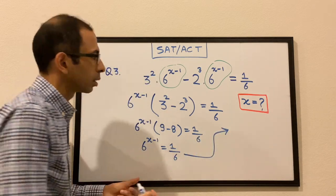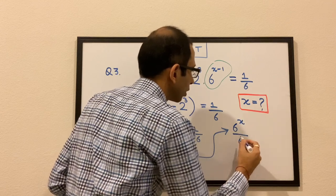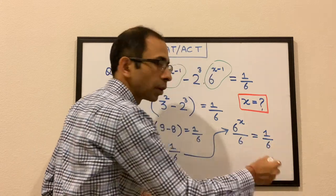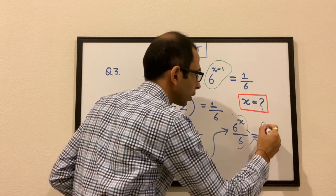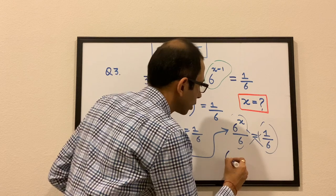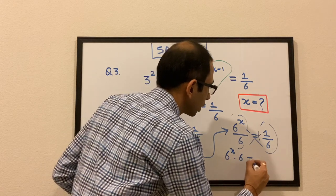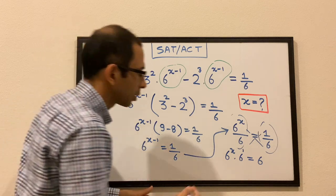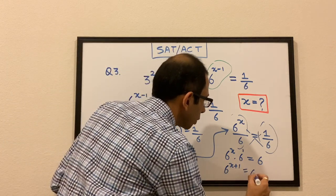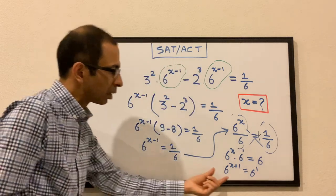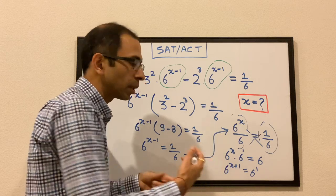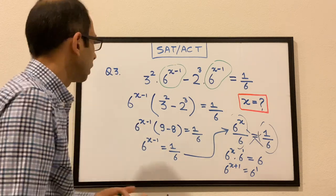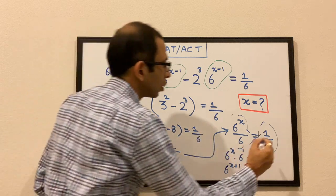We can write 6^(x−1) as 6^x / 6. Cross-multiplying gives 6^x × 6 = 6, i.e., 6^x × 6¹ = 6¹. Adding the exponents on the left: 6^(x+1) = 6¹. Since the bases are the same, the powers must be equal: x + 1 = 1, so x = 0.